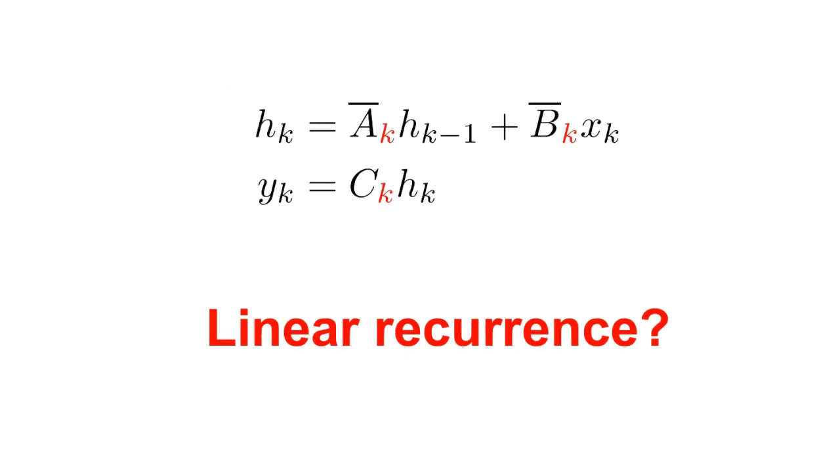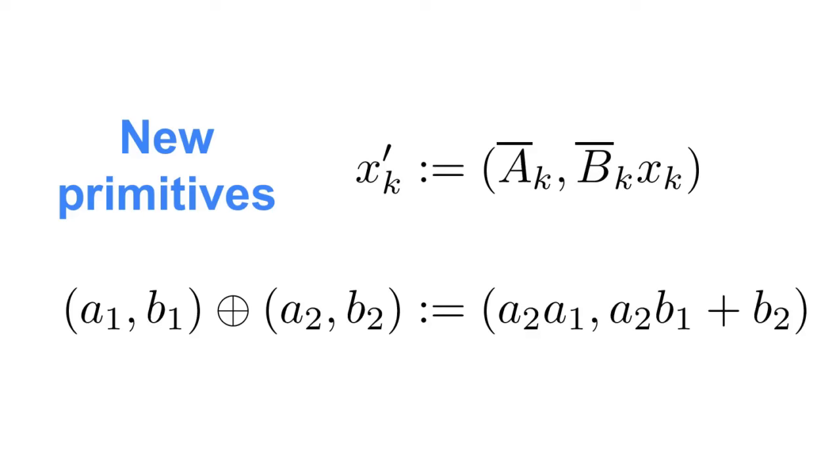Now, as I mentioned, this is working for a cumulative sum where the associative operator is the well-known addition operator. But if we want to apply this to the linear recurrence that we defined earlier for linear time-varying systems, it's not obvious at first blush how to make that happen. And indeed, to define this as an associative scan, we'll need some new primitives.